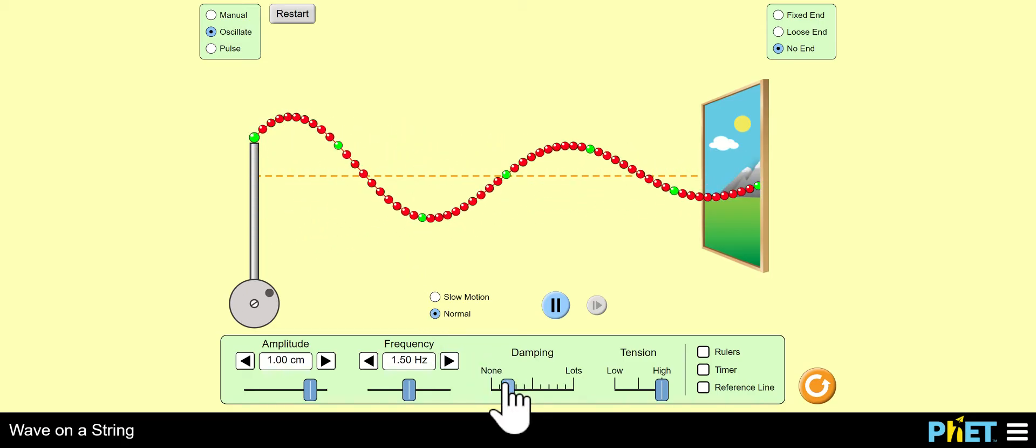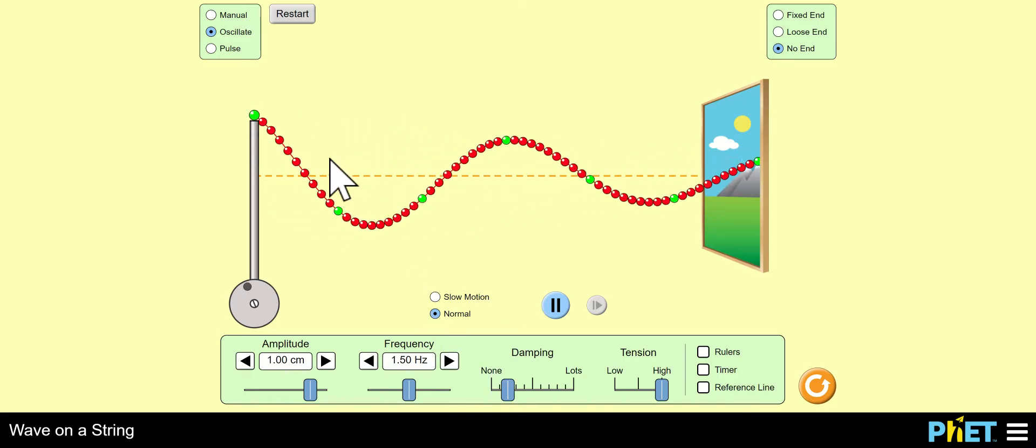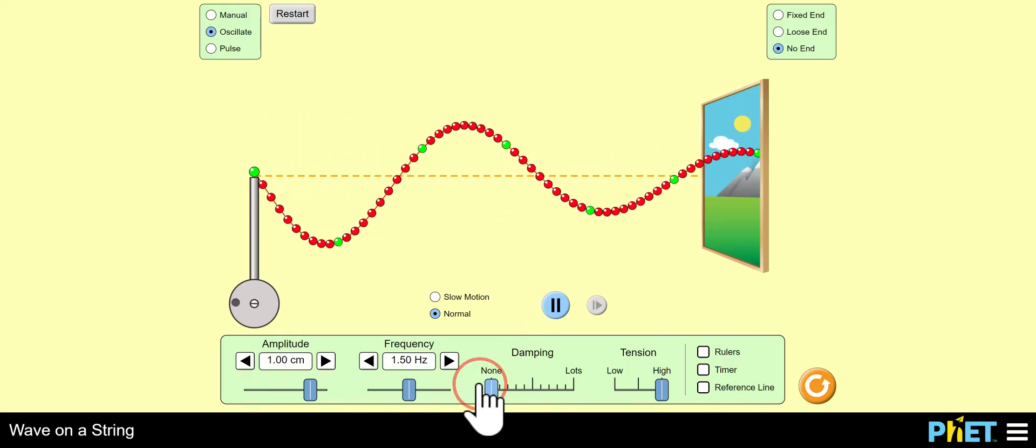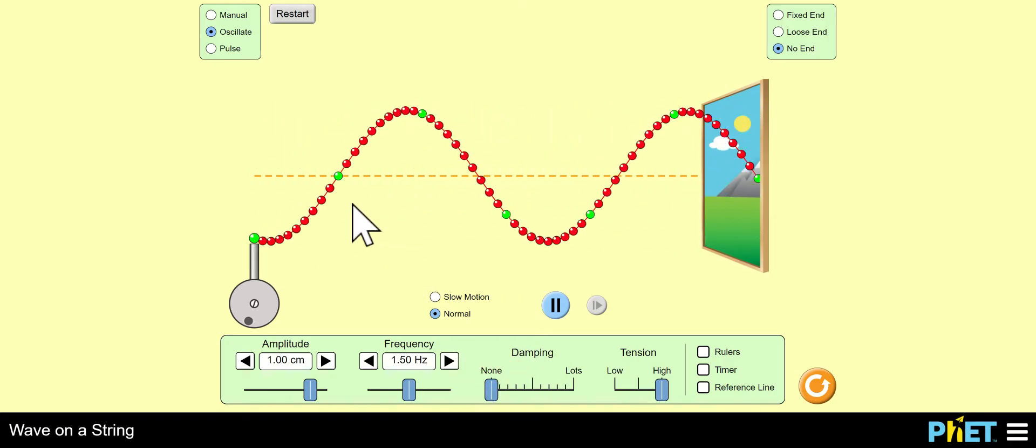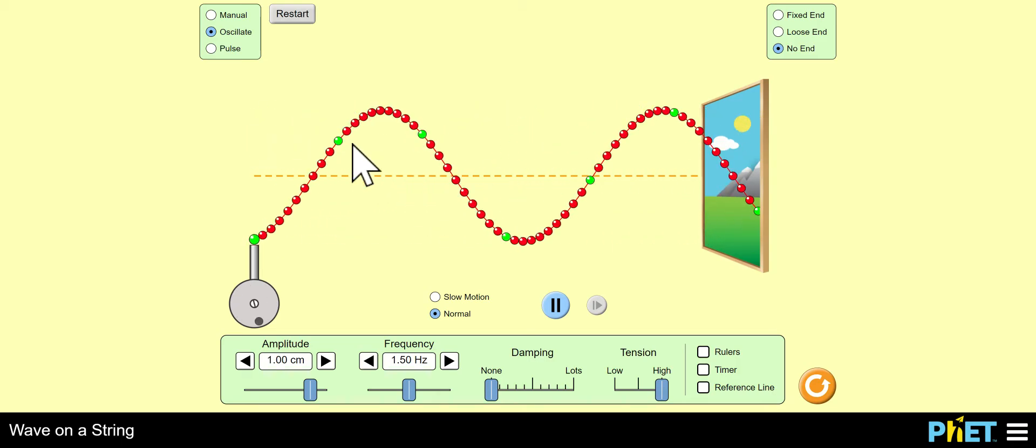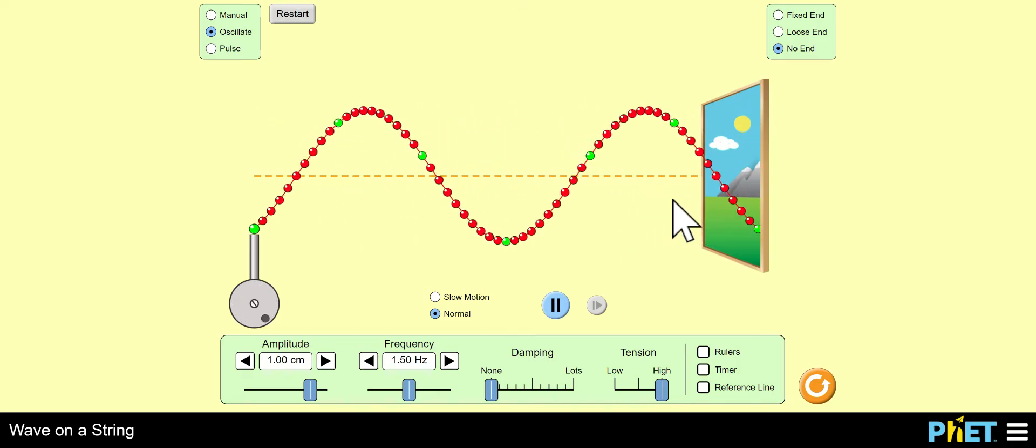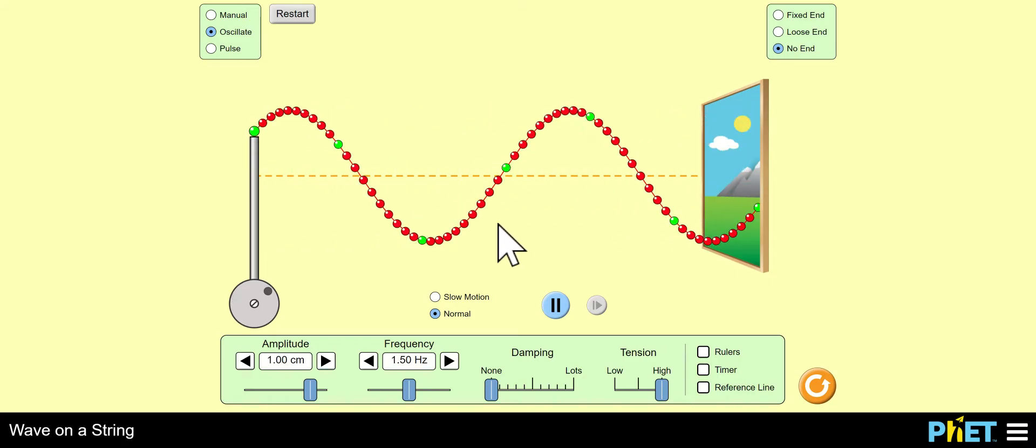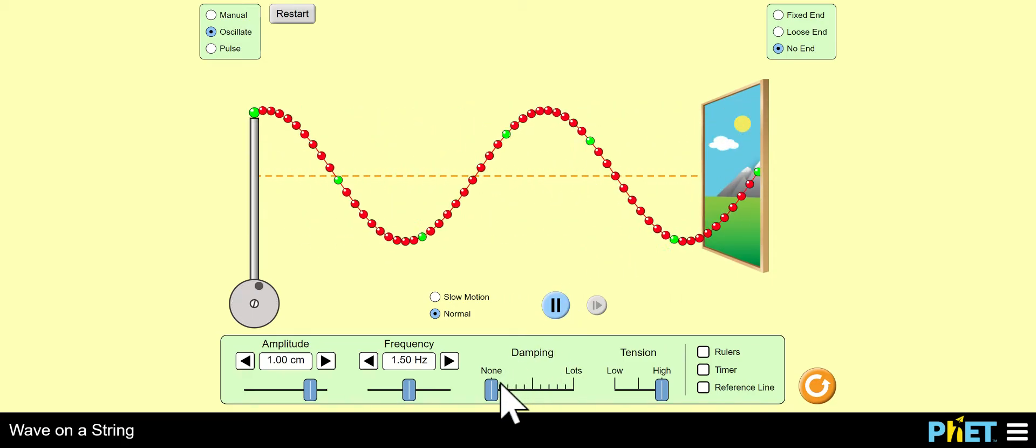Definitely turn off dampening. Notice how the amplitude of the wave gets smaller and smaller. If we turn off dampening, it becomes a little less realistic because the fact of the matter is the energy of the wave would decrease as it went down the beaded rope. So put the dampening to zero.